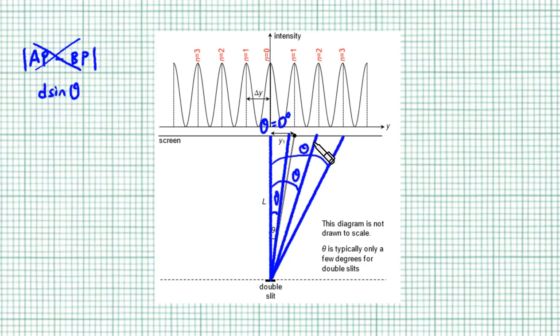Now we have a very neat formula to predict where we are going to find constructive or destructive interference. Whenever D sine theta is 0 or lambda, 2 lambdas, 3 lambdas, and so on, we get constructive interference and bright fringes. When D sine theta is half a lambda, one and a half lambdas, two and a half lambdas, three and a half lambdas, and so on, we get destructive interference and dark fringes.